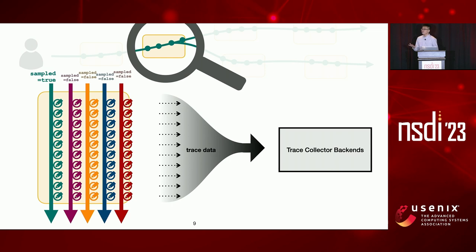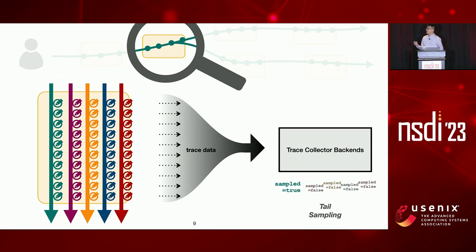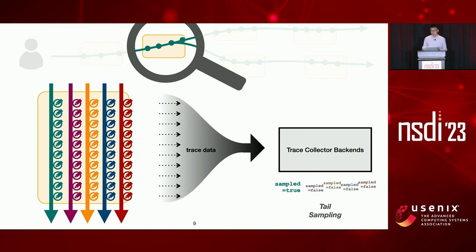An alternative sampling method is called tail sampling, which makes the sampling decision after the trace collector backend — meaning after a trace is collected, it decides whether to persist the data. This can ease post-processing because there is less data to process, but generating and collecting the trace data still introduces too much overhead.